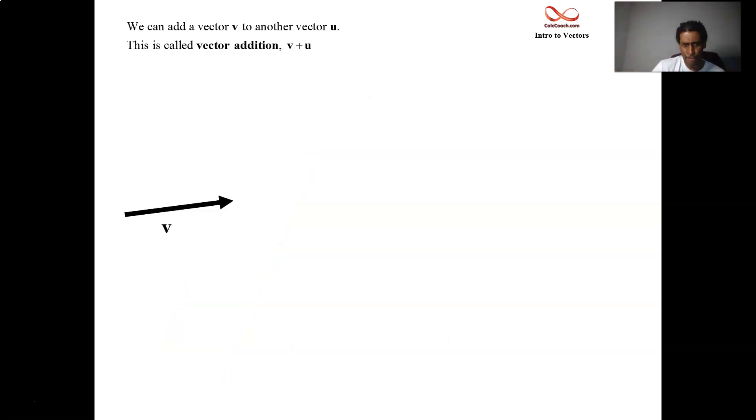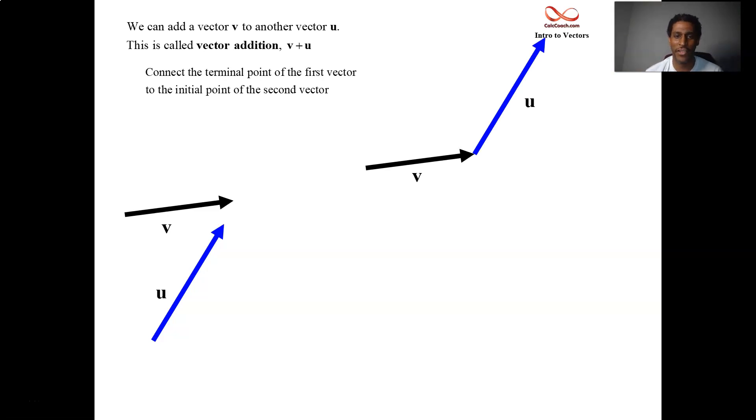The more difficult operation to get a handle on, though, is adding two vectors. You have a vector V. You have a vector U. They're not tied down in space. They're just anywhere. And I like to add V and U together. How do I do that? Well, here's how. You should connect the terminal point of the first vector to the initial point of the second vector. All right. Sounds good. Black vector V. Blue vector U. Terminal point of the black vector. Initial point of the blue vector. Hey. Good job.